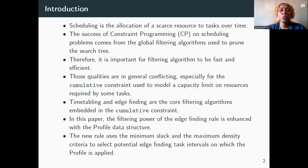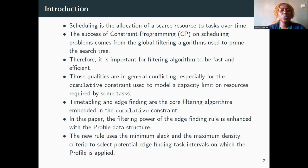Scheduling is usually defined as the allocation of a scarce resource to tasks over time. Scheduling problems can be classified according to the nature of the task, the type of the constraint, and the objective function used to characterize the solution. The success of constraint programming on scheduling problems comes from the global filtering algorithms used to prune the search tree. At each node of the tree search, filtering algorithms are repeatedly applied. Therefore, it is important for them to be fast and efficient.